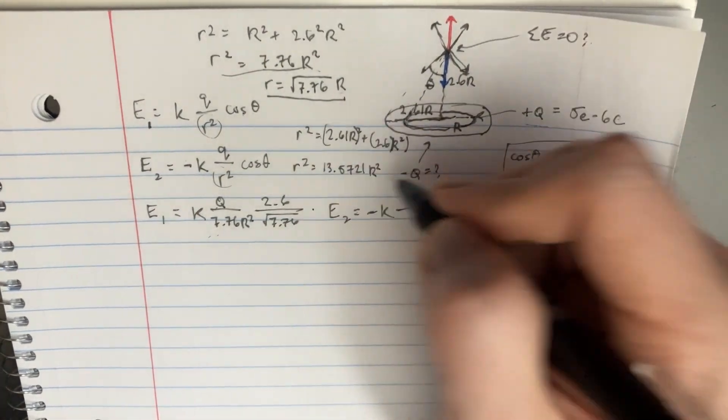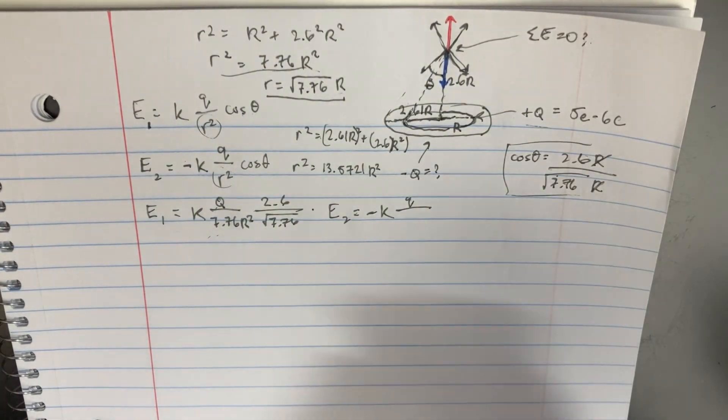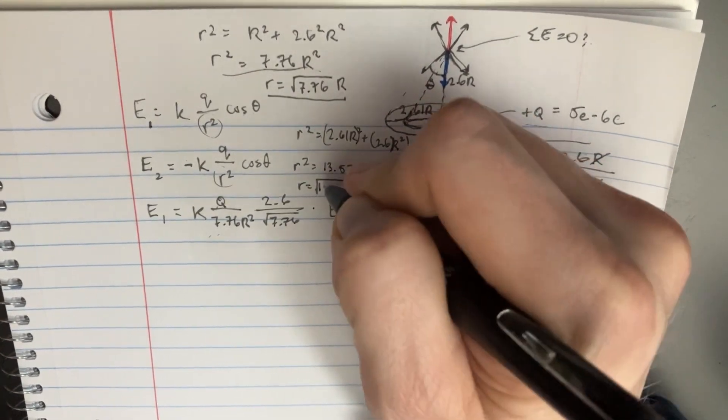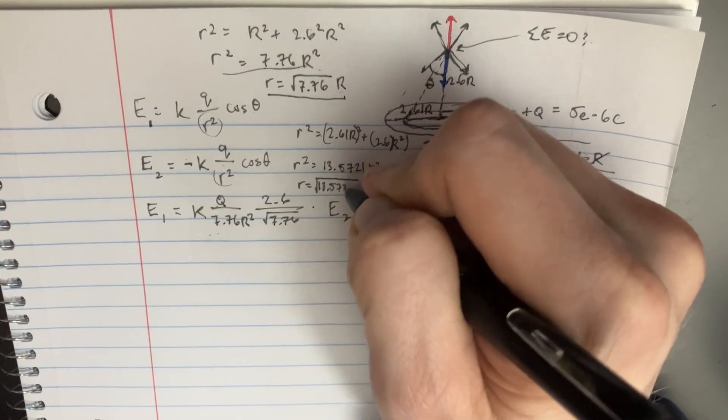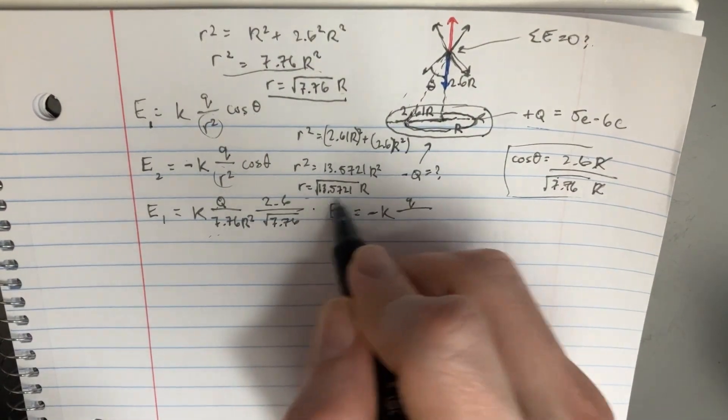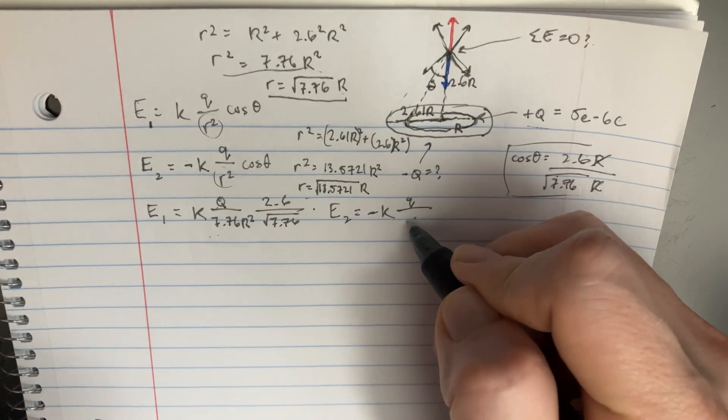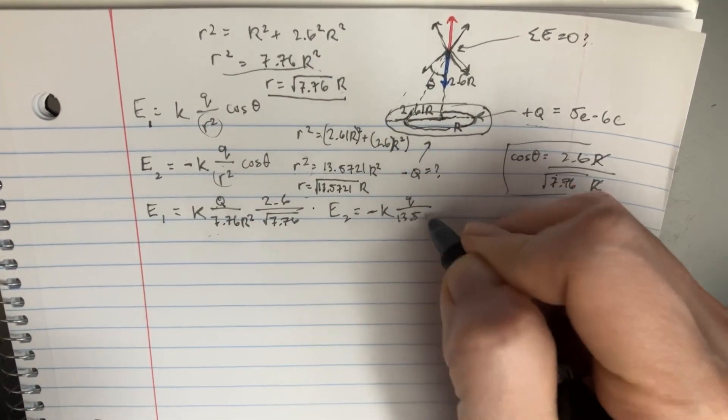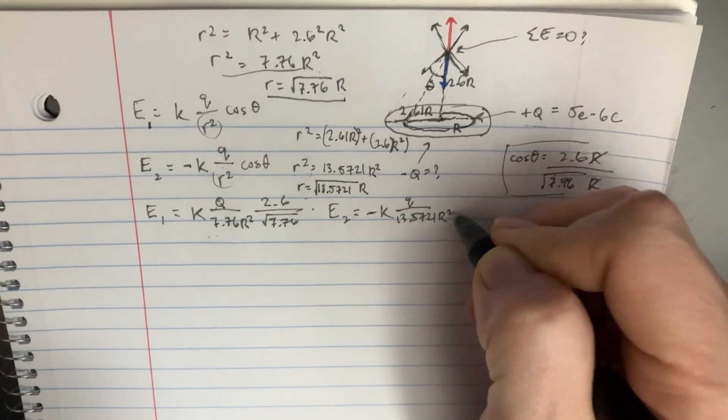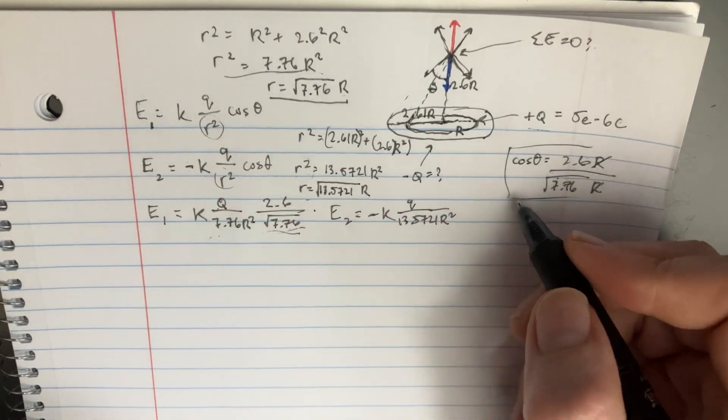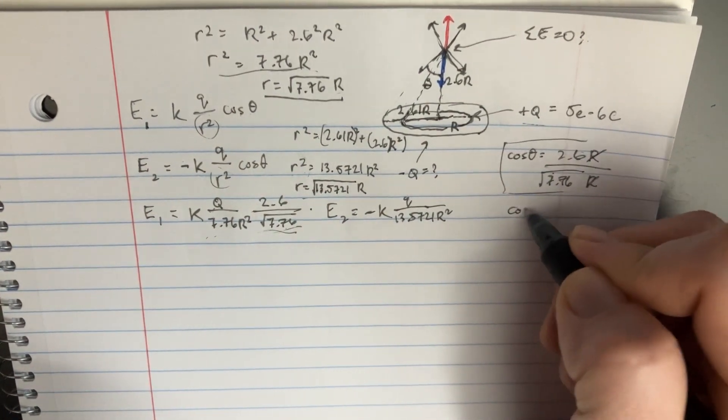And then you get the smaller r is equal to the square root of 13.5721 r. All right, this is what we're going to plug in to this bottom side. First it's the r squared, 13.5721 r squared, and then it is the hypotenuse and the cosine theta, right?